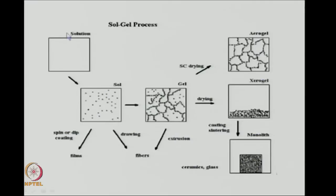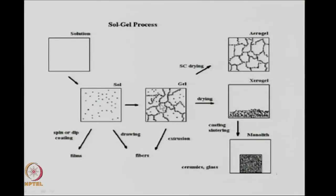In a pictorial view, you start from a solution and then get a sol where particles are dispersed in a liquid. Depending on what you want, you can get several products. You can spin-coat or dip-coat the sol to get films. You can draw fibers out of it — fibers of oxides or metal fibers depending on the particles. You can also allow the particles to condense and form a network (a gel) and then dry it in different ways. Simple drying where the structure collapses gives what is called a xerogel.